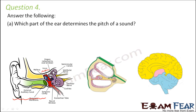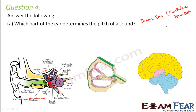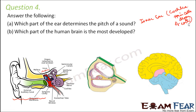To be more specific, the receptor cells or hair cells present in the organ of Corti in the cochlea determine pitch. So the answer is the inner ear, or more precisely the cochlea — the hair cells in the organ of Corti.